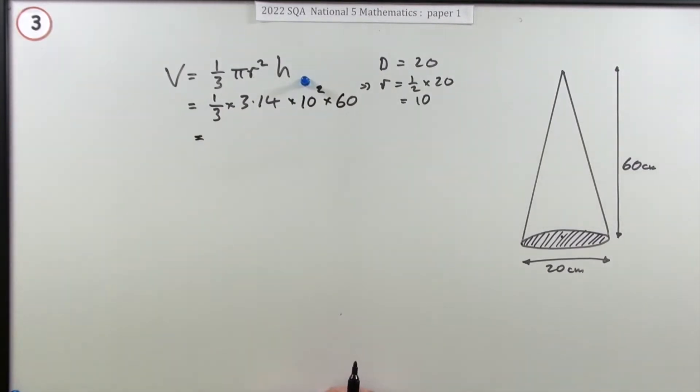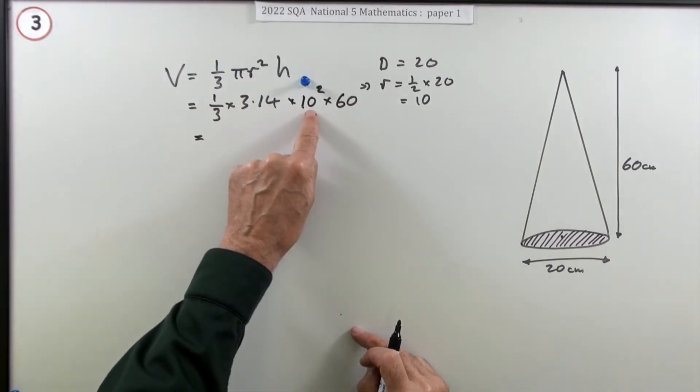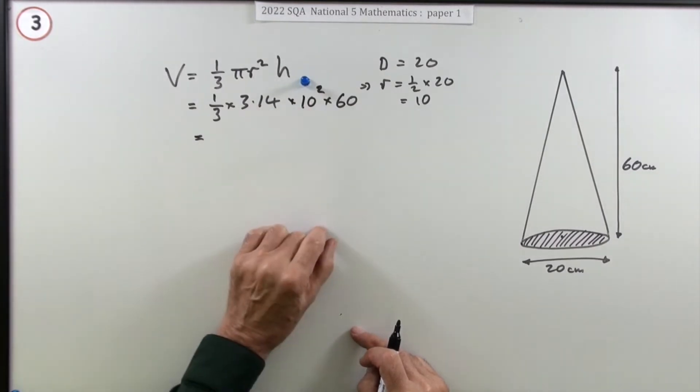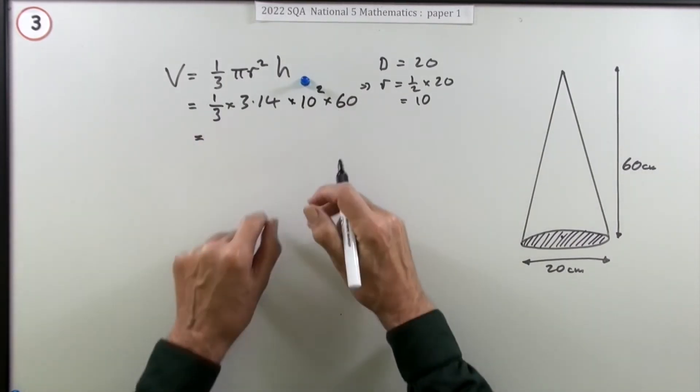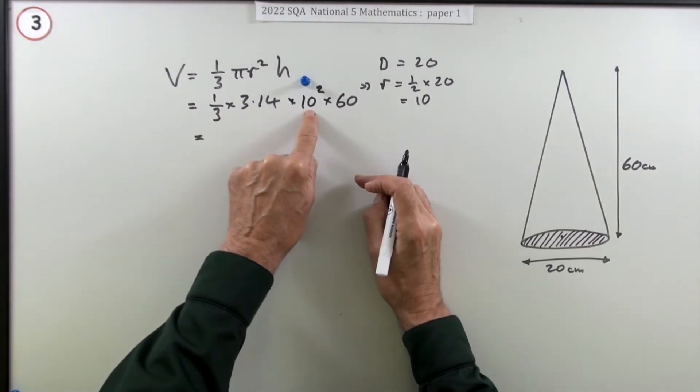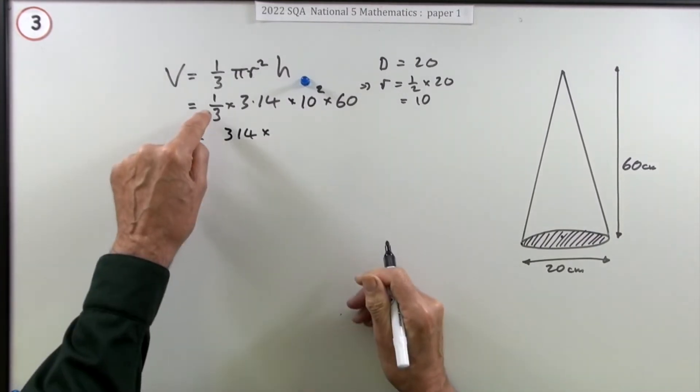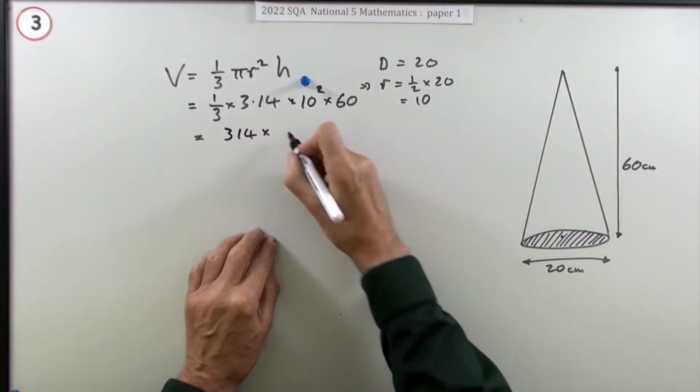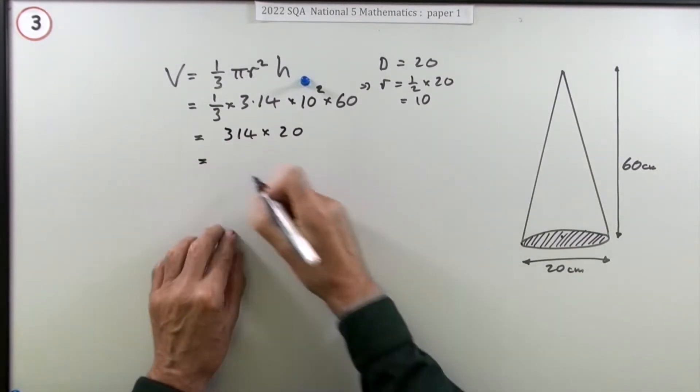Now it's just a case of working that out. There are several sensible things you can do - there are some tens, tens can move a point, and there's a divide by three and there's a number that divides by three. A hundred times that - each time you multiply by 10 the point will move - that will change that into 314. Use that 3 to divide it into the 60, that makes that a 20.